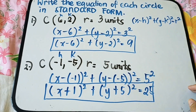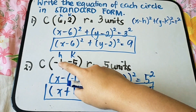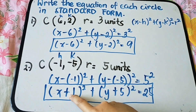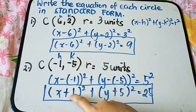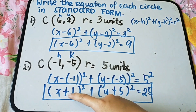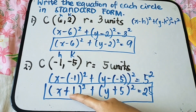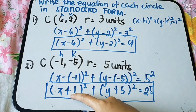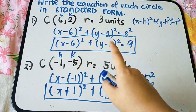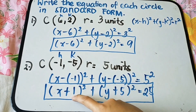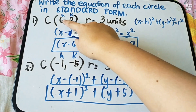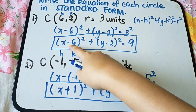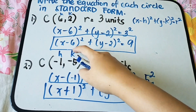Notice the sign pattern: when the given coordinate is negative, the result in the equation becomes positive, because negative times negative is positive. Conversely, when the coordinate is positive, the result is negative. That is the simple pattern.